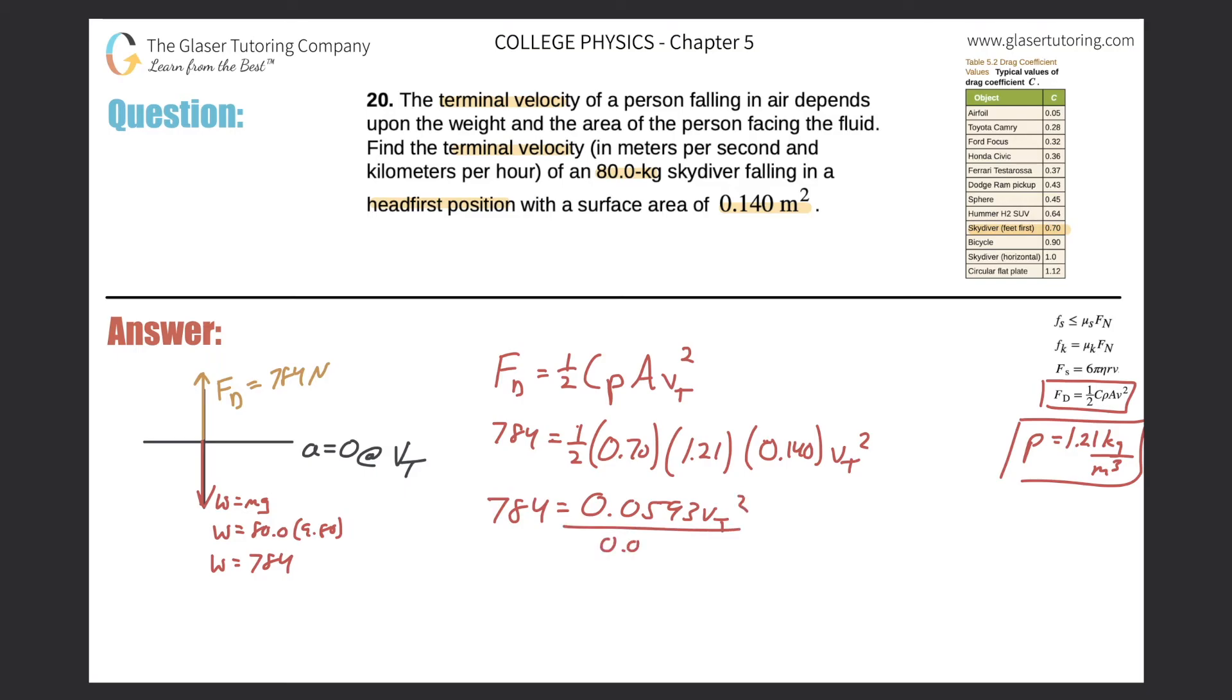Now solve for V_T. So divide out the 0.0593 from both sides, 0.0593. So now the terminal velocity squared will equal 784 divided by 0.0593. And that works out to be about 13,200. And square root that to get rid of the square. Remember whenever you square root, you get plus and minus. So in this particular case, right, they'd be traveling down. So actually their terminal velocity should be negative. But that's a really minor point. So we get 115. If we consider sig figs, we get 115 meters per second. That is the terminal velocity in meters per second.